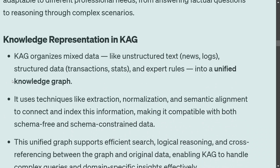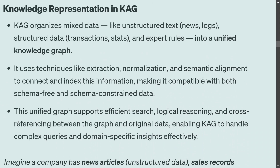There is a concept called knowledge representation in CAG. CAG organizes mixed data — like unstructured data such as news and logs, structured data, and expert rules — into a single graph. This is very interesting because nothing like that has come before that is able to cater everything in a single unified graph. It uses techniques like extraction, normalization, and semantic alignment to connect and index this information, making it compatible with both schema-free and schema-constrained data.